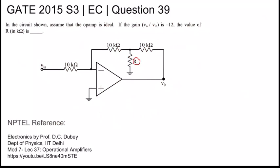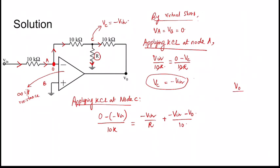We have one information given in the question: V0 by Vin is minus 12. So this equation we write as Vin by 10K equals minus Vin by R plus minus Vin plus V0 by 10K. Now dividing by Vin on both sides, we have 1 by 10K equals minus 1 by R minus: